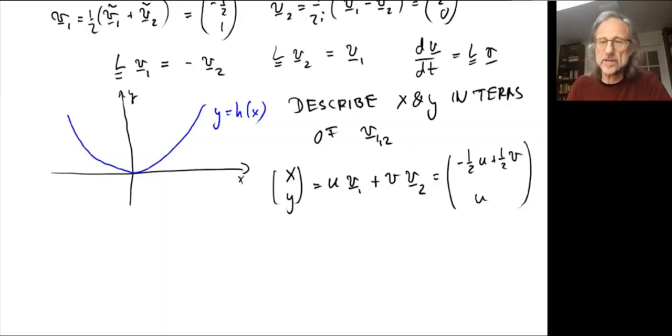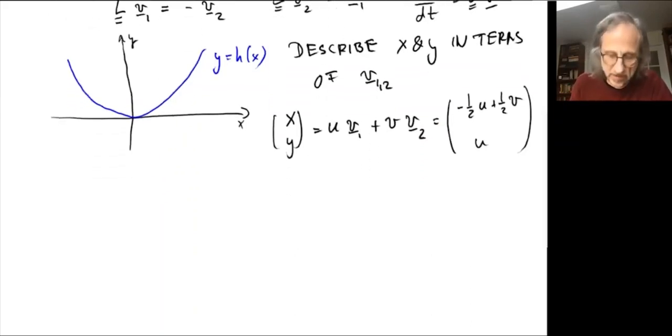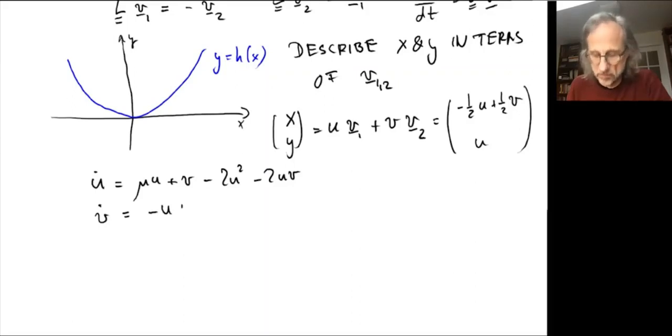That means we can now rewrite the equations that were originally phrased in x and y in the coordinates u and v, which span the center eigen space. If you do that, skipping the algebra, you get u dot equals mu u plus v minus 2u squared minus 2uv, and v dot equals minus u plus mu v plus 2u squared minus 2uv. Now we have described the dynamics in terms of the coordinates on the center manifold, which corresponds to what we had in the one-dimensional case.